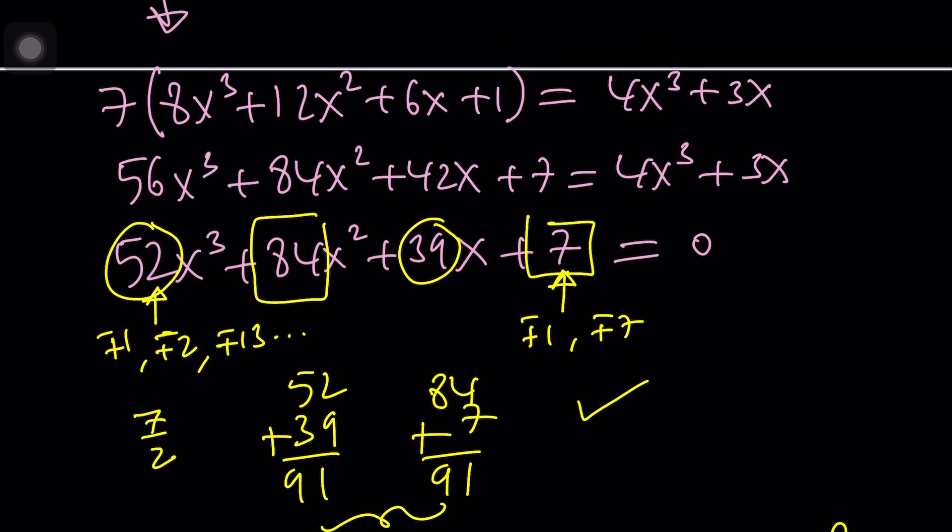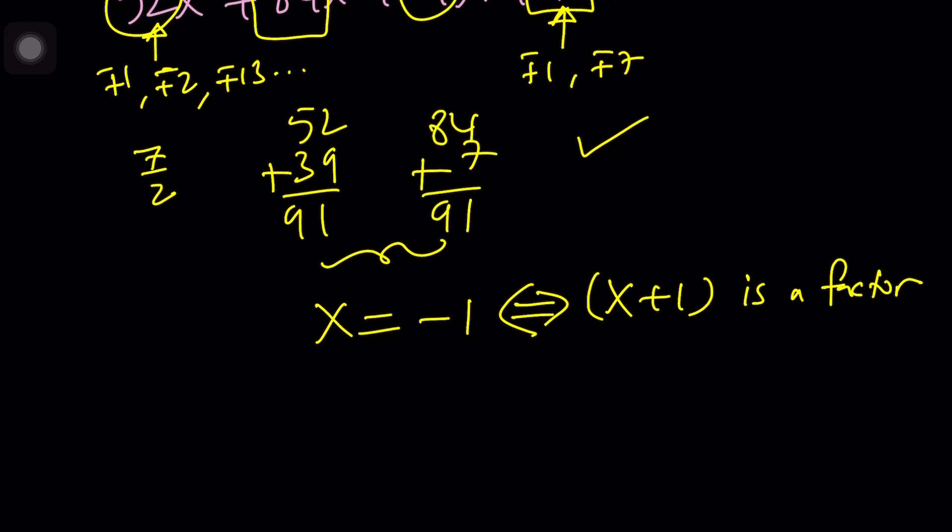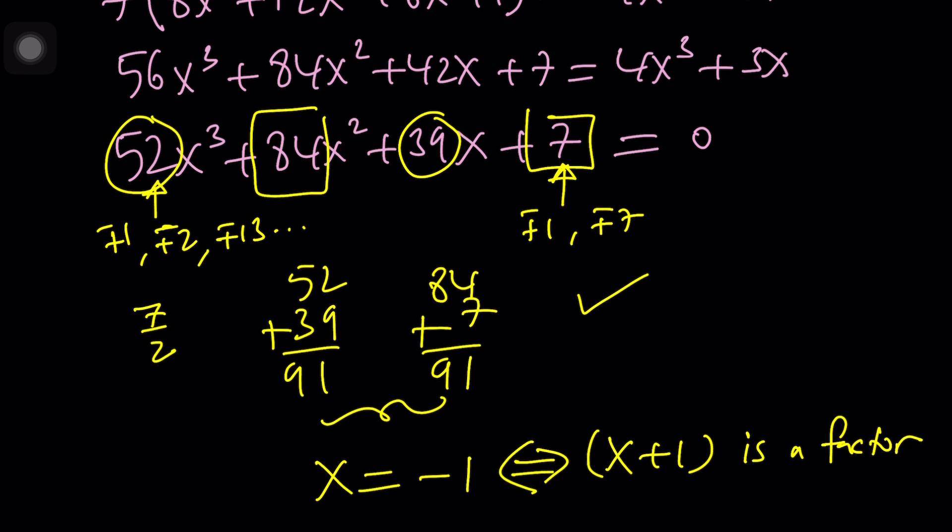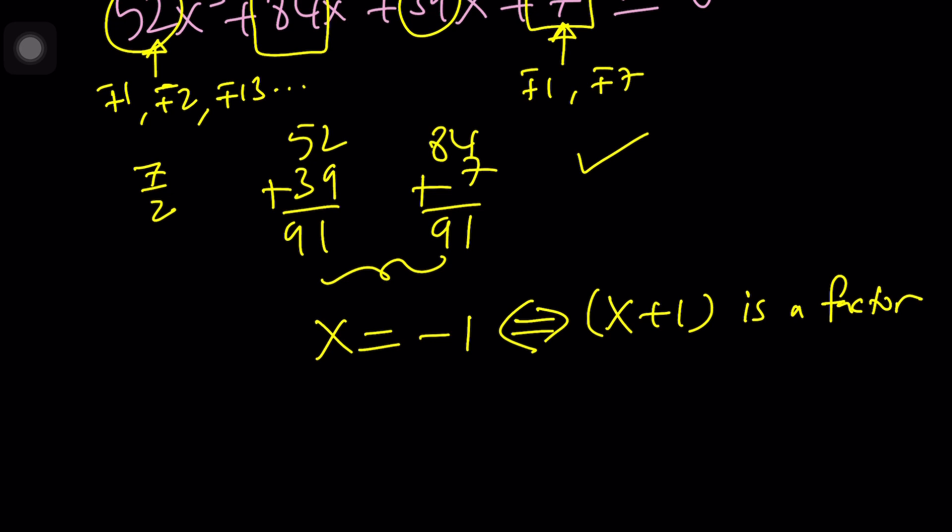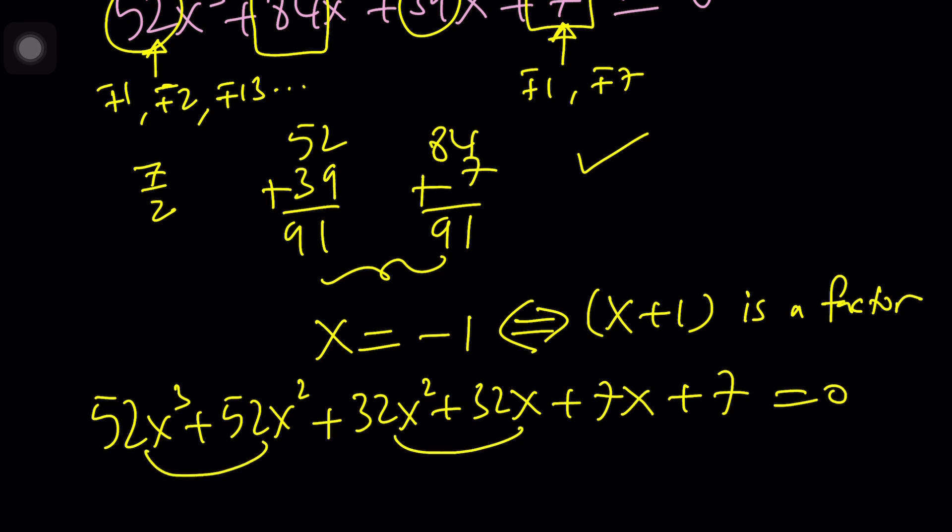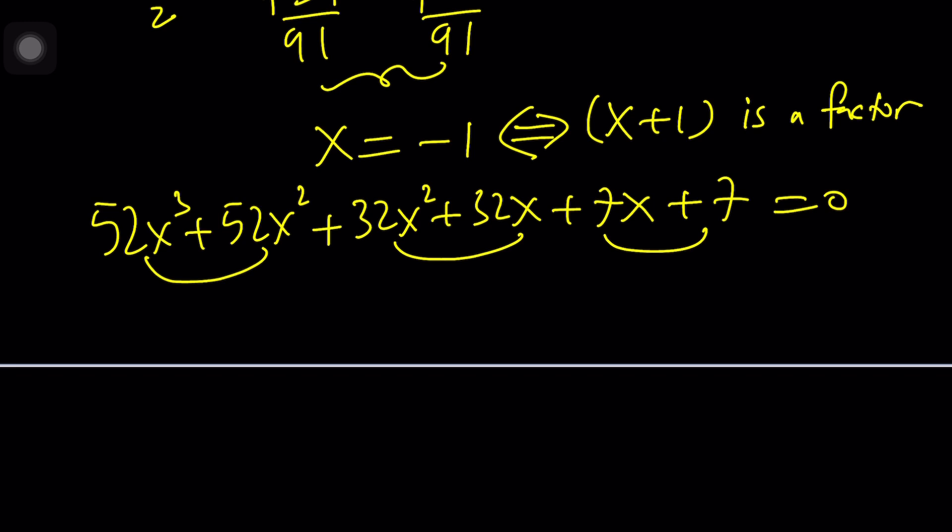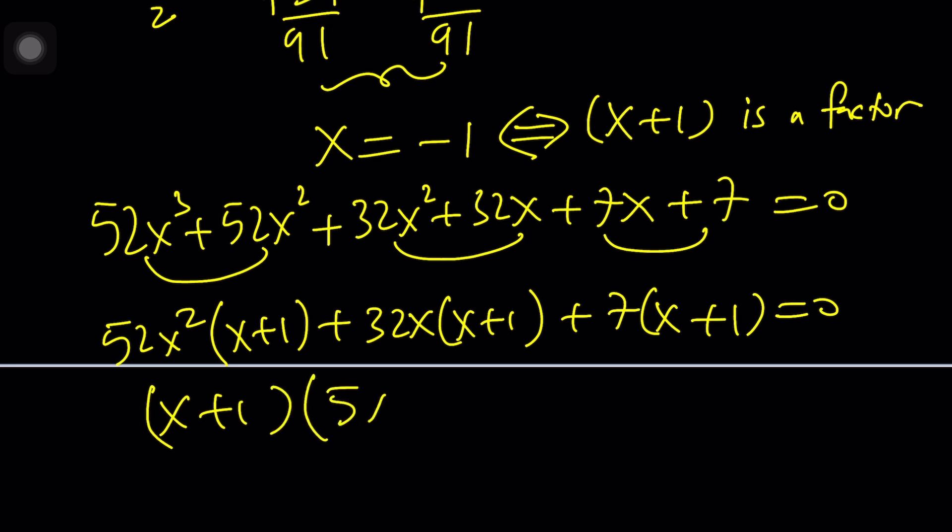So now we know that this is divisible by x plus 1. So we can do polynomial long division or synthetic division or Horner's method, whatever you want to call that. Or you can just manipulate it to reflect this fact. I can start with this and follow up with that, and then to make up for the difference between 84 and 52, I can add 32x² and then follow up with 32x, and then follow up with 7x to get 39x, and then follow up with 7. Now I can factor by grouping. This will give us x plus 1, and then we can finally pull it out. And the second factor will be a quadratic.